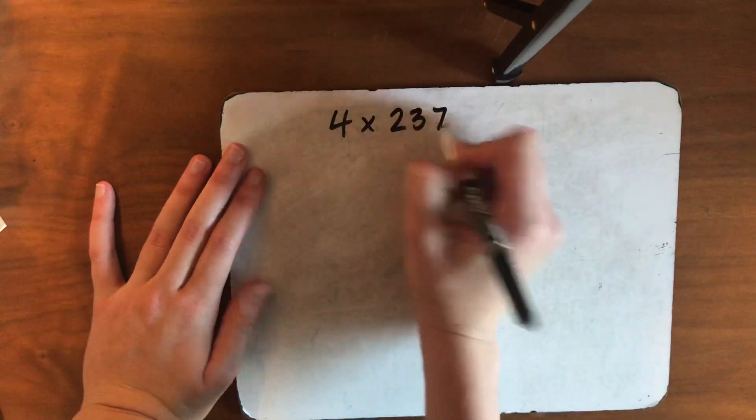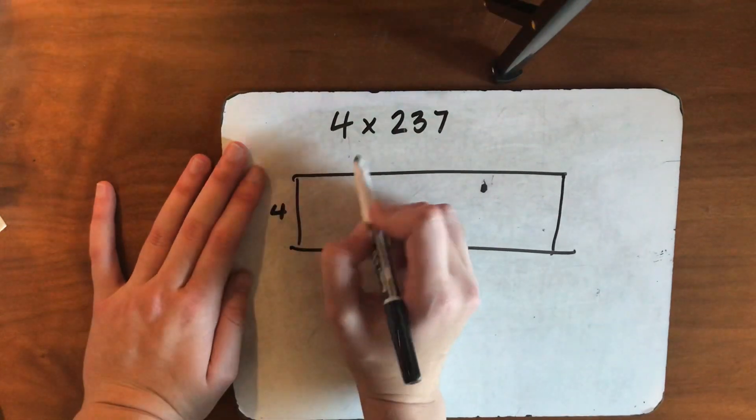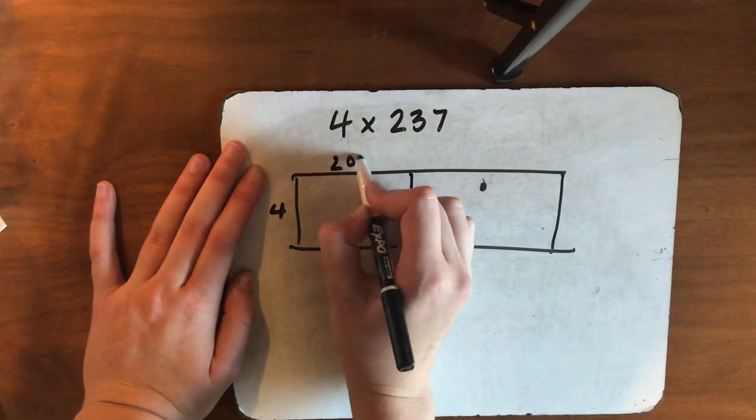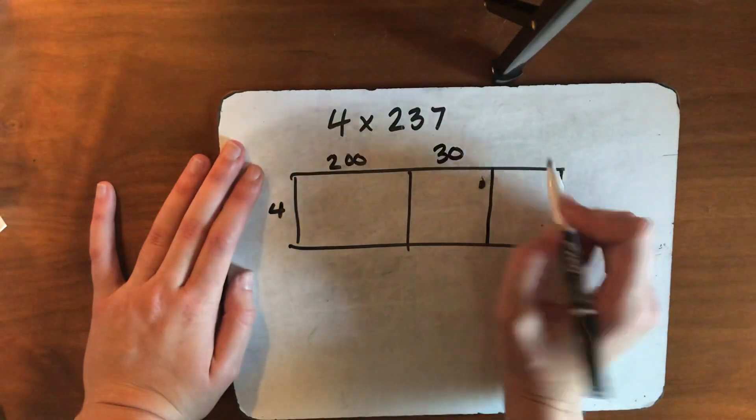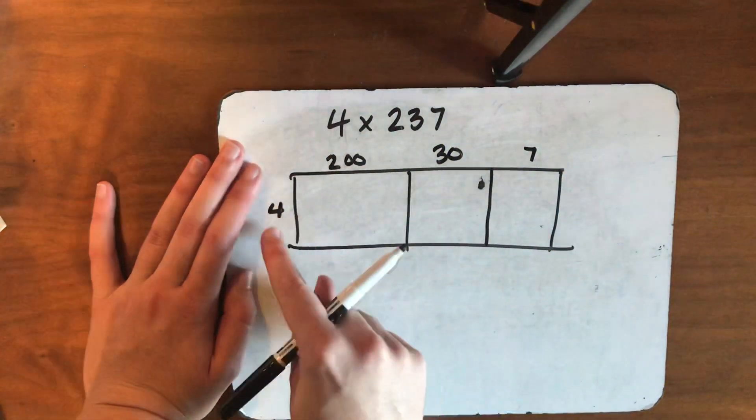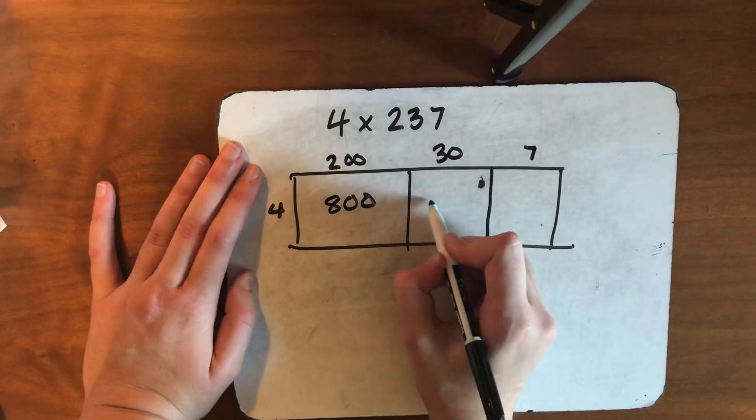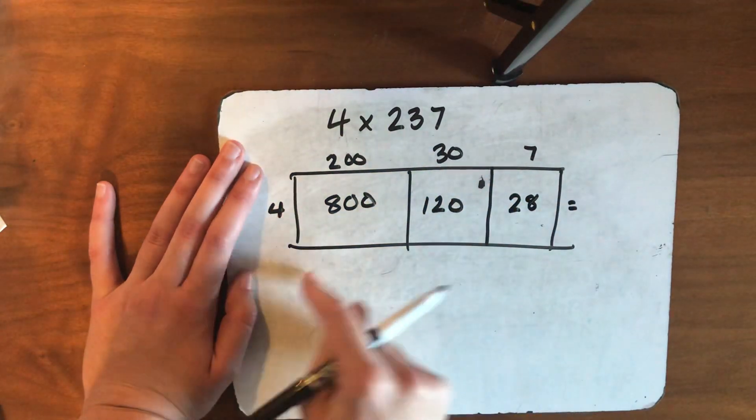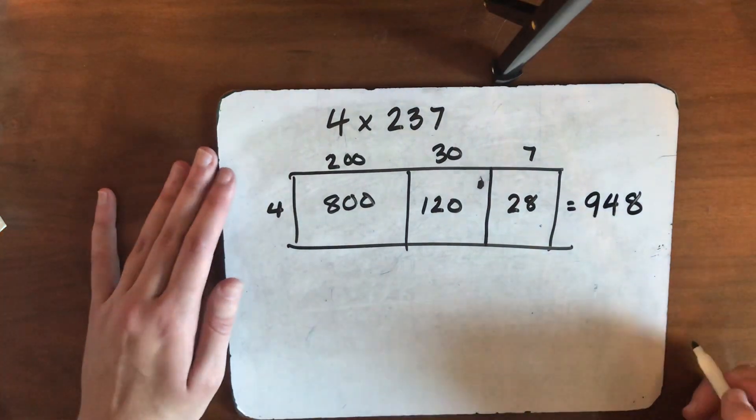Let's try this one. If I had 4 times 237, I show my place value box here, little one over here, 4. 237, what would I break that up into? How much is the 2 worth? 200. How much is the 3 worth? 30. How much is the 7 worth? 7. Fill in my boxes. 4 times 200? 800. 4 times 30? 120. 4 times 7, 28. Add them up. 800, 920, 948. Woo! Awesome.